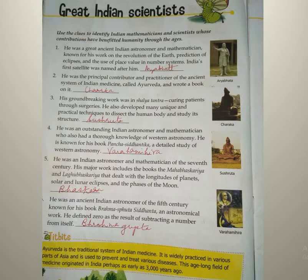Blank was a great ancient Indian astronomer and mathematician known for his work on the revolution of the earth, prediction of eclipses and the use of place value in number systems. India's first satellite was named after him. The answer is Aryabhata. It can also come as: 'After whom is India's first satellite named?' or 'India's first satellite is named after which famous mathematician?' All these ways lead to the common answer: Aryabhata.